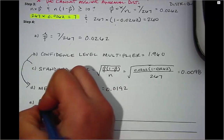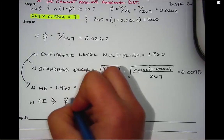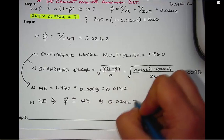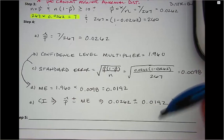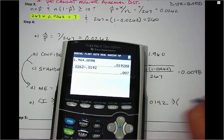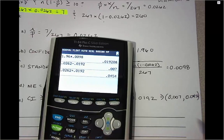Finally, we calculate the confidence interval itself by taking our statistic P-hat and then adding and subtracting the margin of error. We have 0.0262 plus or minus 0.0192. It's best to subtract first to get the lower bound and add second to get the upper bound. So the lower bound is 0.007 and the upper bound is 0.0454.